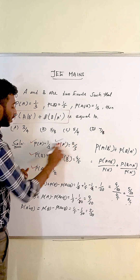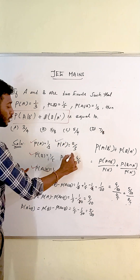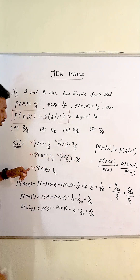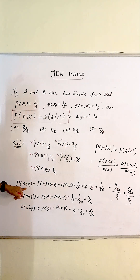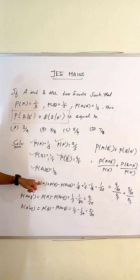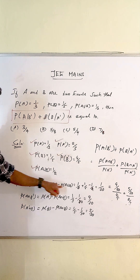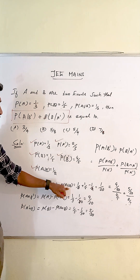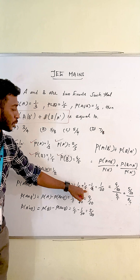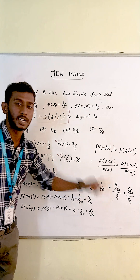The complement values are: A-bar = 2/3, B-bar = 4/5. Next, P(A intersection B) using the addition formula: P(A union B) = P(A) + P(B) minus P(A intersection B). Substituting gives the value.